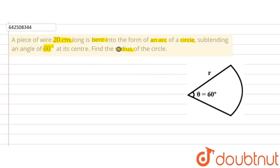We are supposed to find out the radius of the circle. Something like this has been formed using a wire. It is bent into the form of an arc and that arc is subtending an angle of 60 degrees at the center. We are supposed to find out the radius.